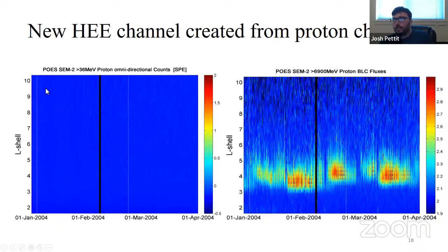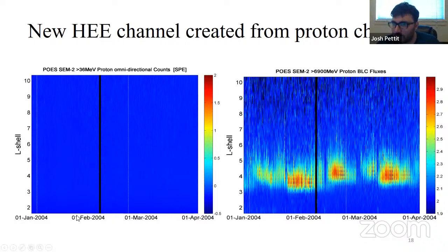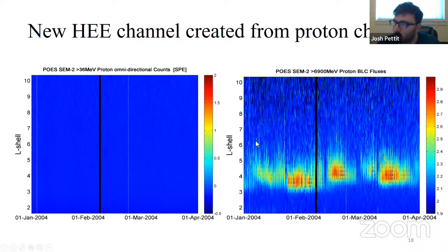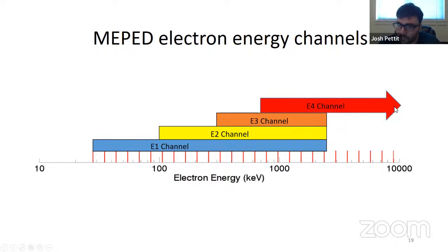One benefit is that relativistic electrons contaminate the P6 channel in the POES MEPED instrument. So we also get a bonus high energy channel during periods where there are no protons precipitating. This shows the first few months of 2004 — one of the proton channels showing nothing going on, indicated by blue, and on the right the P6 channel that sees a lot of activity. We think this can be used as a proxy for relativistic electrons. So we now have E1, E2, E3, and this virtual E4 channel, giving energy coverage from about 25 keV through about 10 MeV — bumping against auroral electron precipitation all the way through relativistic electron precipitation.